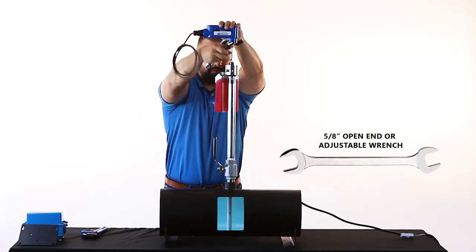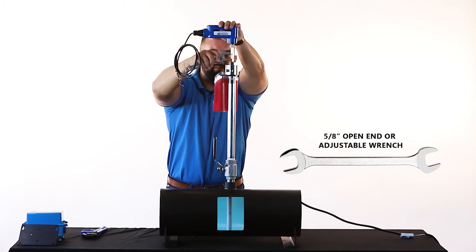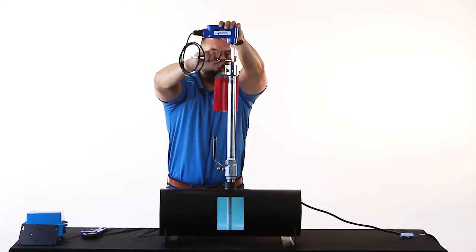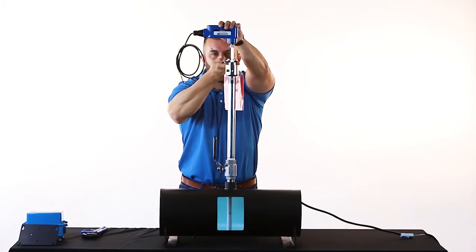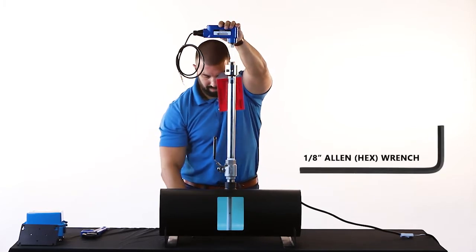Use a 5/8 open end wrench to tighten the stem locking collet nut while holding the flow sensor enclosure to maintain alignment with the pipe, and then use the 1/8 inch Allen wrench to tighten the preload fitting set screw.